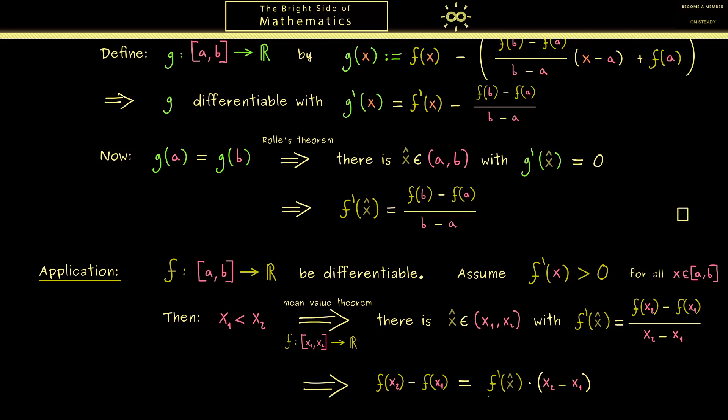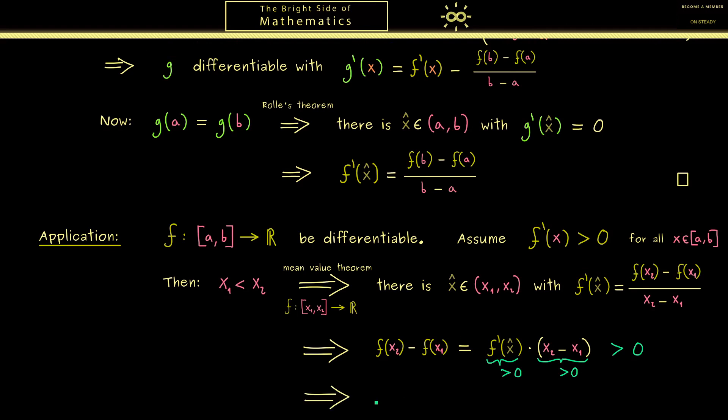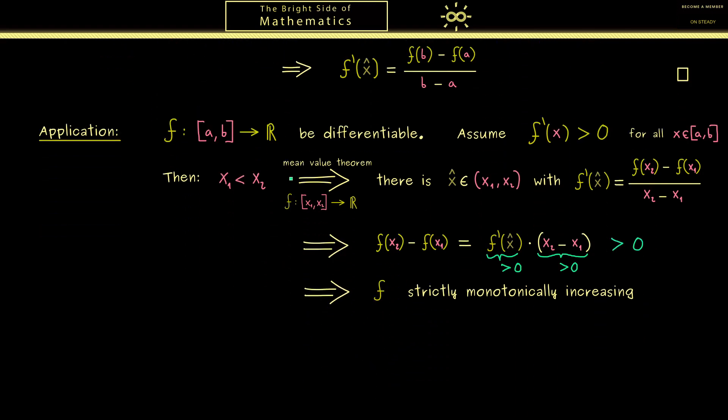Now we can put in our two assumptions. First we know the derivative is positive. And secondly we know x2 - x1 is positive as well. Hence we can conclude the left hand side of the equality is also positive. Which means the value f(x2) is greater than the value f(x1). And since the numbers x1, x2 were arbitrarily chosen we conclude that the function f is increasing. Or more concretely we would say f is strictly monotonically increasing. Now indeed this is a nice result we immediately get out of the mean value theorem. So in short we can simply say if the derivative is always positive we get out a function that is at all points strictly monotonically increasing.